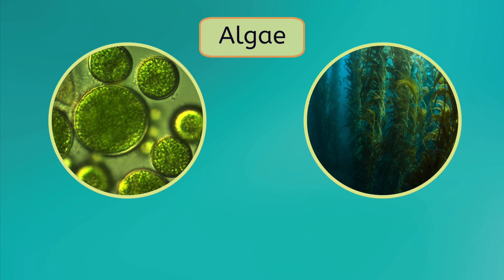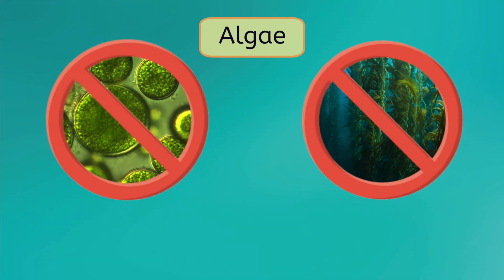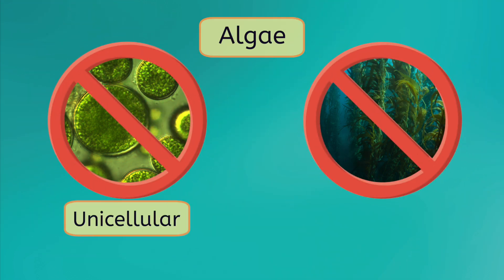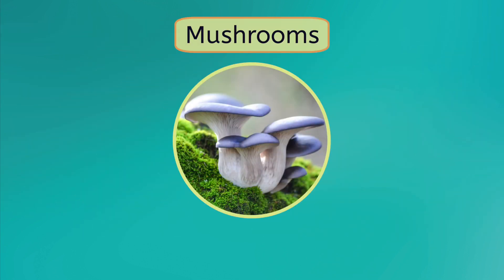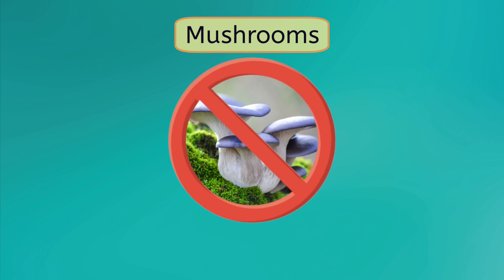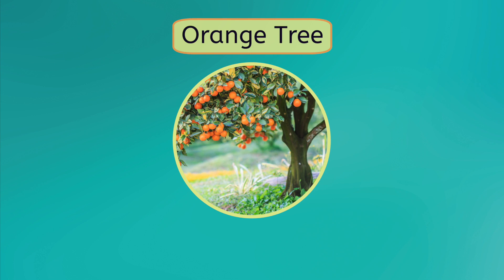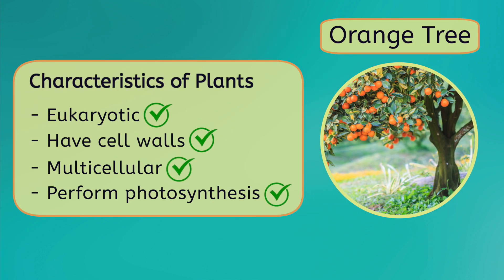For example, because all plants are multicellular, algae — commonly referred to as seaweed or kelp — are not considered plants because they can be unicellular or multicellular. Additionally, mushrooms are not plants because they can't perform photosynthesis. An orange tree, however, is a plant because it checks off all the boxes of our four key plant characteristics.